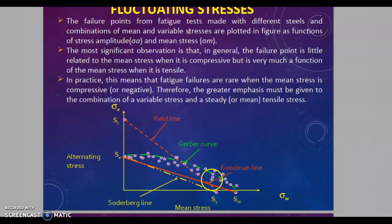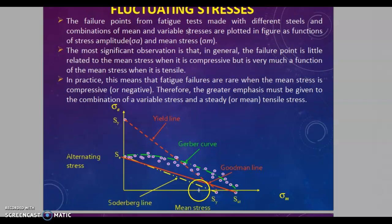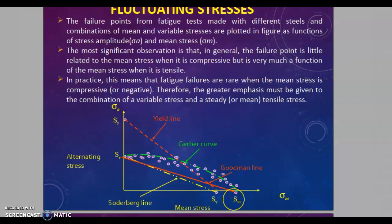According to the Gerber theory, if the alternating stress value is less than the endurance limit value AC and the mean stress value is less than SUT, then the specimen will be safe. The Gerber curve is the curve joining AC (endurance limit) on the alternating stress axis and the ultimate tensile strength on the mean stress axis. The safe region is the lower area of that curve; the area above is the unsafe region.